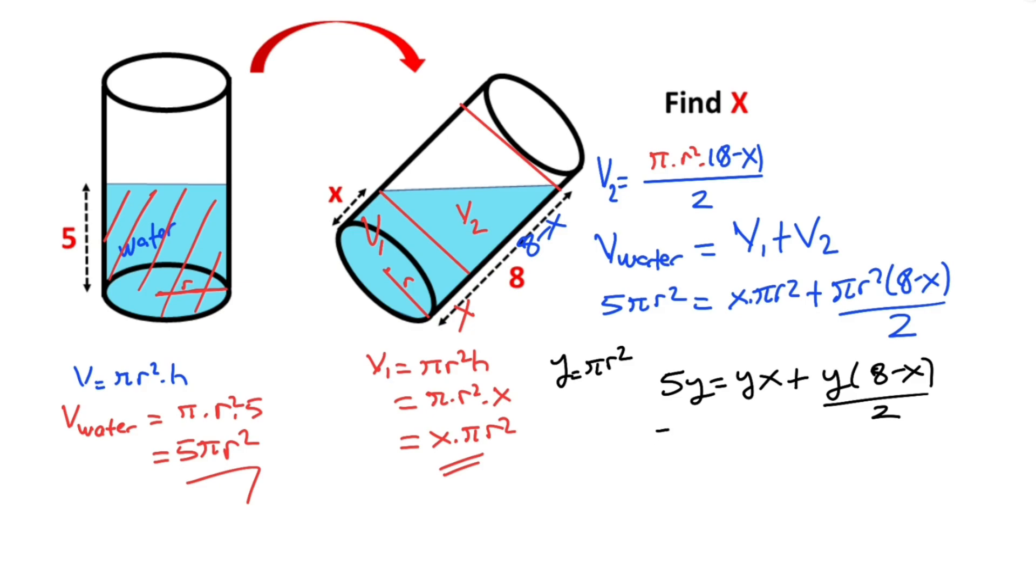Then if we organize the equation, 5y equal 2yx plus 8y minus yx over 2. So 10y equal yx plus 8y, therefore, 2y equal yx, these are cancelled, that means x equal 2 units.